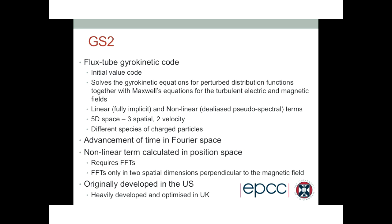I'm not a plasma expert, so I can say these words but I don't necessarily know what all of them mean. GS2 is a gyrokinetic code — a flux tube gyrokinetic code — which solves gyrokinetic equations for perturbed distribution functions and also for turbulent electric and magnetic fields. The gyrokinetic equations have a 5D data domain: 3 spatial and 2 velocity dimensions, because one of the velocity dimensions is averaged in the gyrokinetic averaging.